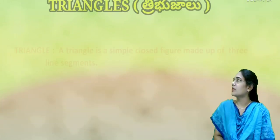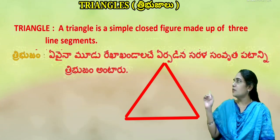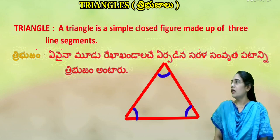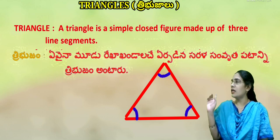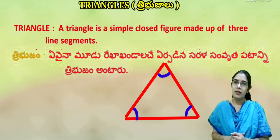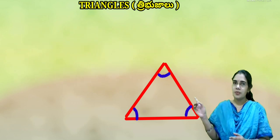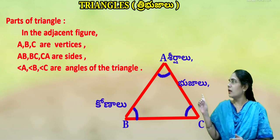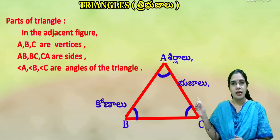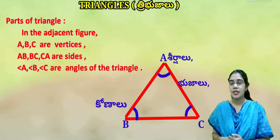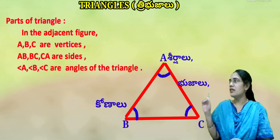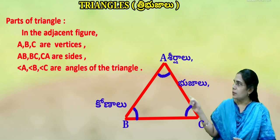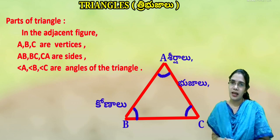Triangle. A triangle is a simple closed figure made up of three line segments. In triangle ABC, A, B, C are the vertices; AB, BC, CA are the three sides (Bujalu); and Angle A, Angle B, Angle C are the three angles (Kona).